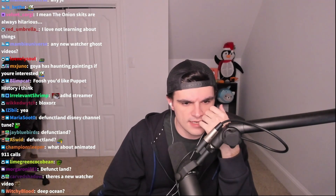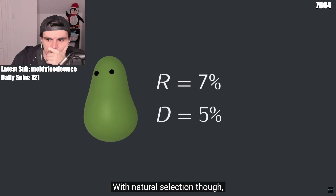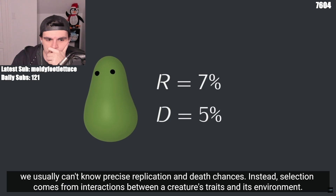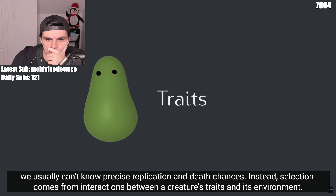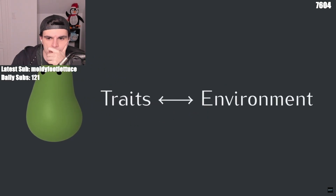Simulating natural selection? With natural selection, we usually can't know precise replication and death chances. Instead, selection comes from interactions between a creature's traits and its environment.